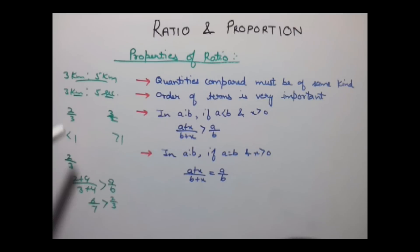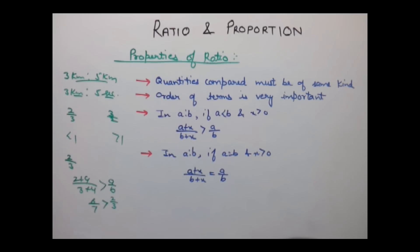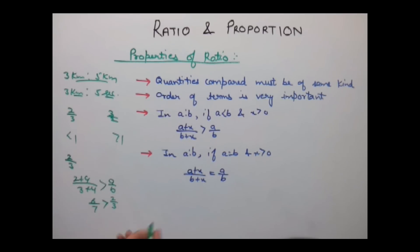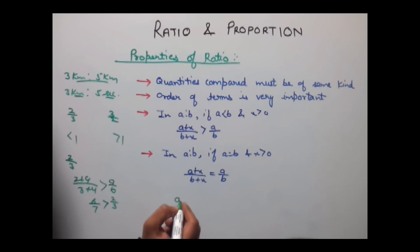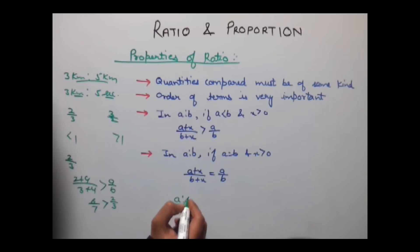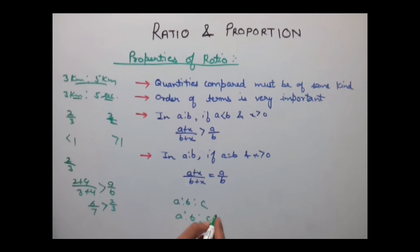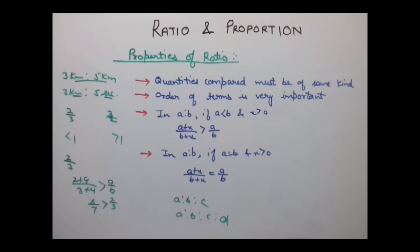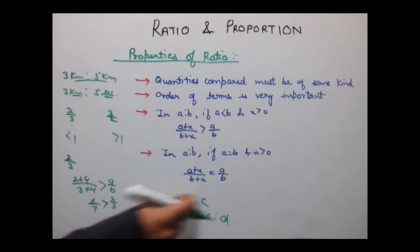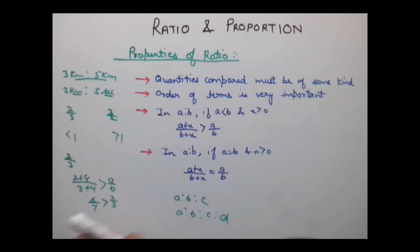It is not necessary that only 2 terms are compared in a ratio. We can compare n number of terms — there can be a ratio of A ratio B ratio C, or A ratio B ratio C ratio D, and so on.